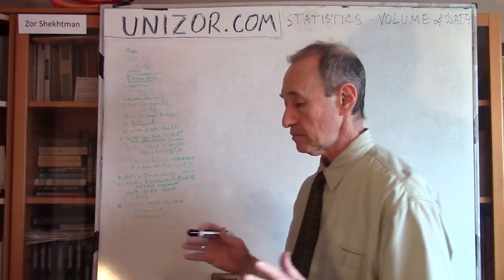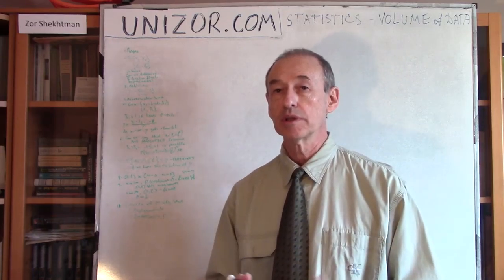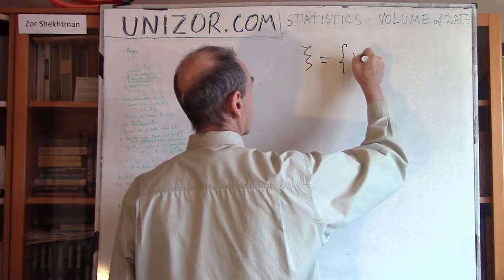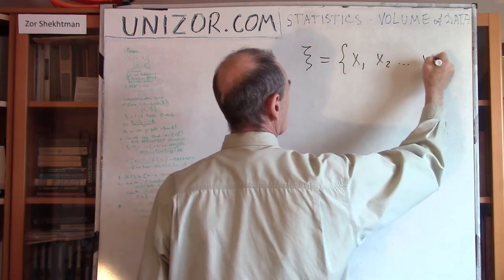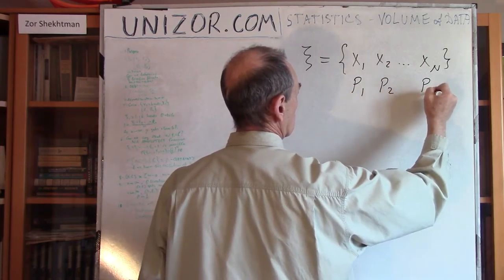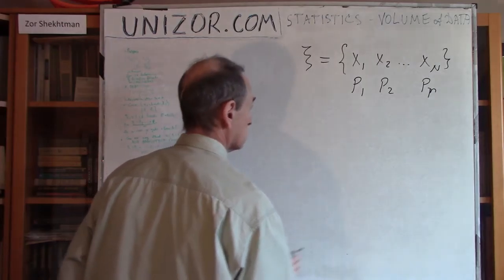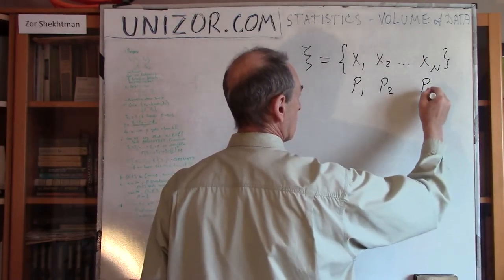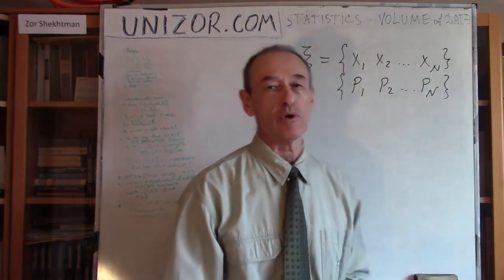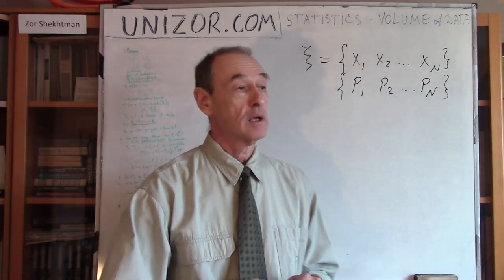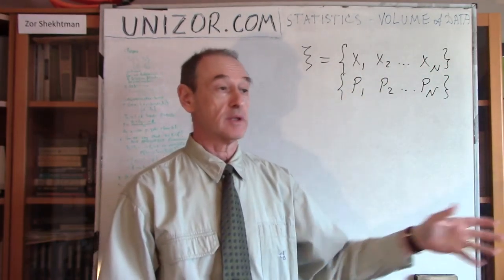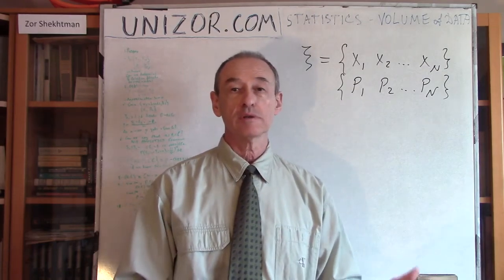What do we deal with? Let's consider, as before, we are dealing with discrete random variables, which might take one of n different values with certain probabilities. This basically describes our random variable. What can we say about this particular random variable? That we don't know anything about it — we don't know the values, and we don't know the probabilities.